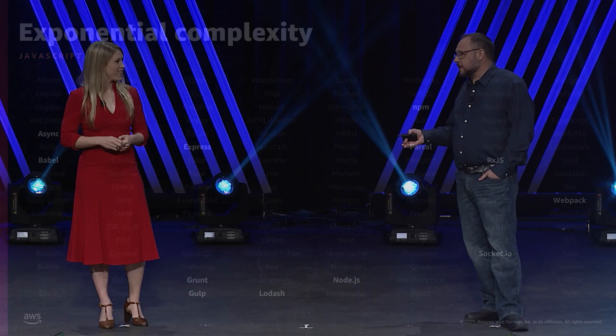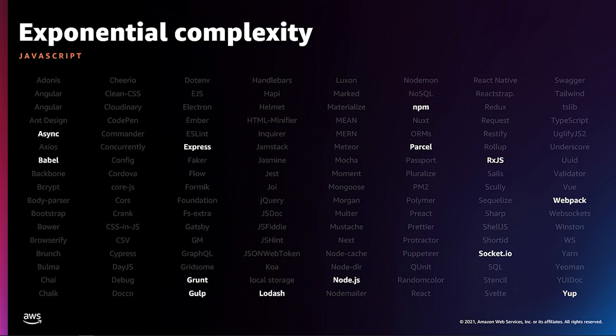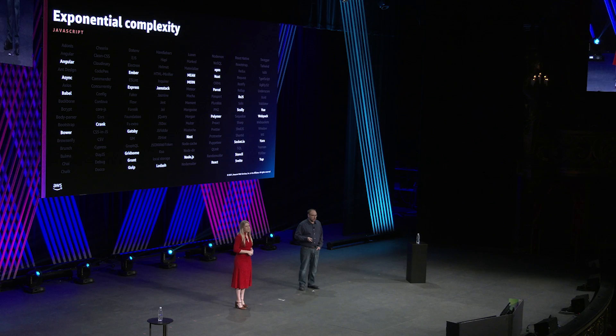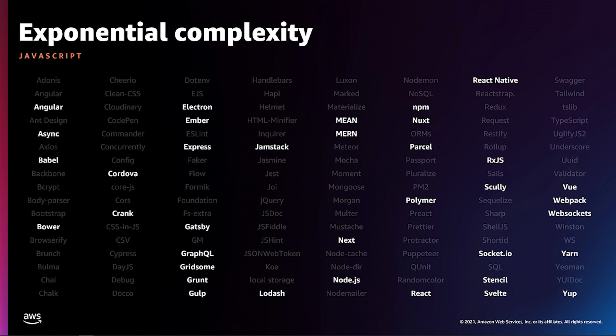But then there are frameworks, modules, and libraries like Express, Socket.IO, Async, RxJS, Lodash, and Yup — the schema builder. And then there's Bower and Yarn, and collections of tooling like Jamstack, Mean, and Myrn. And you have Angular, React, Vue, Svelte, Ember, Polymer, Stencil, Crank, Gatsby, Scully, Gridsome, Next, and Nuxt. There's GraphQL, WebSockets, React Native, Cordova, and Electron. And we haven't even gotten to testing and authentication and sessions and scaling and message queues and local storage and hosting and other utilities. And that's just JavaScript.